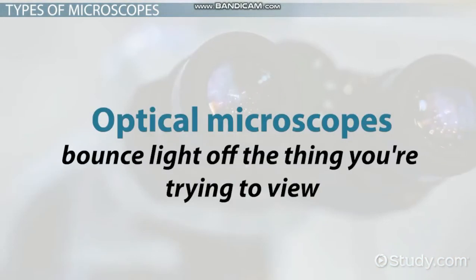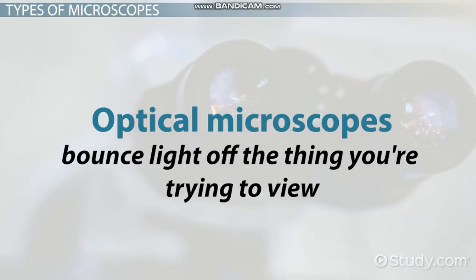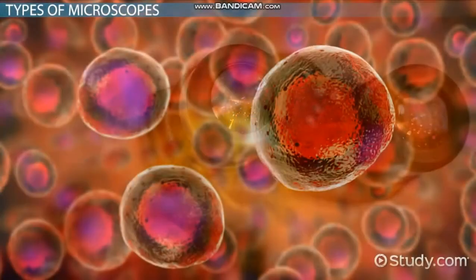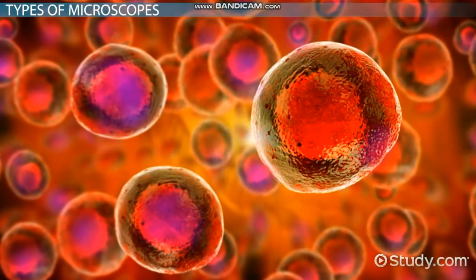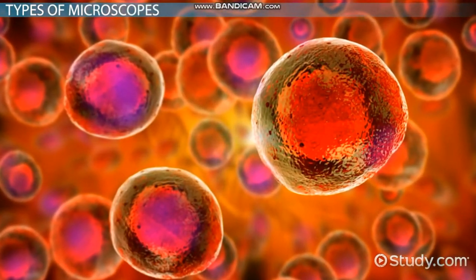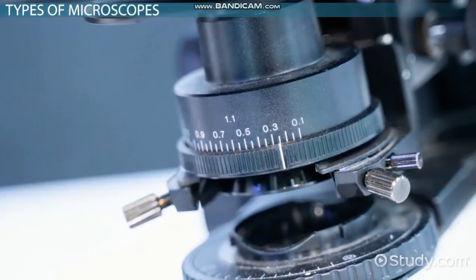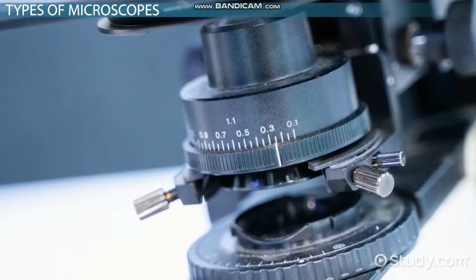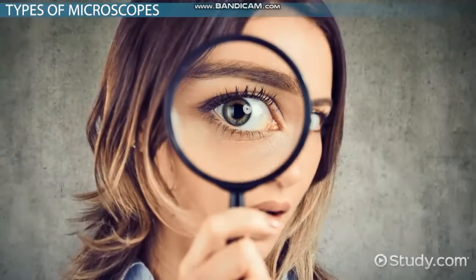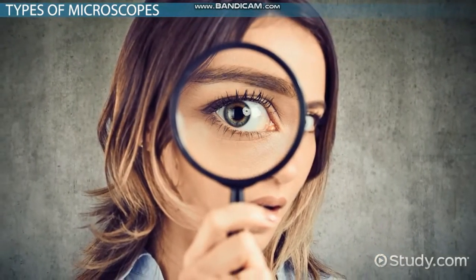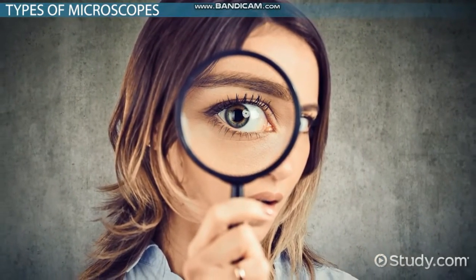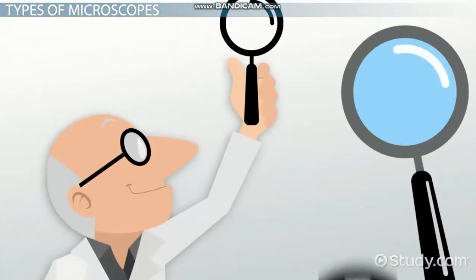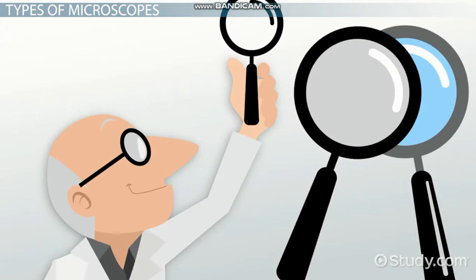Optical microscopes bounce light off the thing you're trying to view. They use diffraction, reflection, or refraction to magnify the image until you can see it. The first kind of microscope ever built was an optical microscope. In fact, you can build a microscope with a simple system of lenses, much like a powerful magnifying glass.